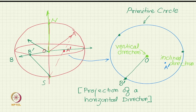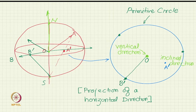The horizontal direction lies in the plane, so it is at 90 degrees to the vertical. The vertical direction is along the vertical, so it is perpendicular to the plane of projection. The inclined direction is not fully specified by just saying inclined — you have to give an angle of inclination with respect to vertical or with respect to horizontal.